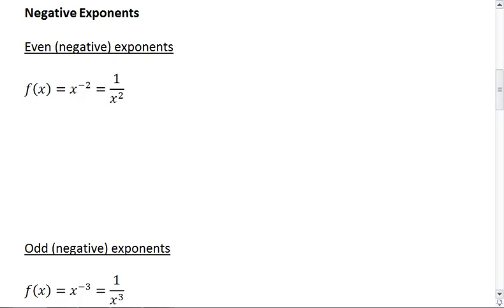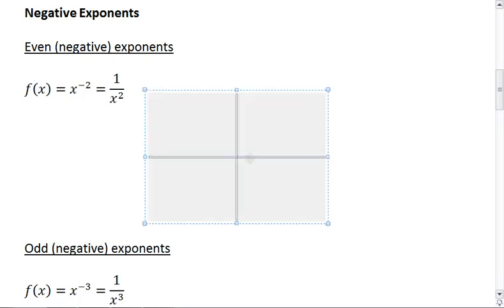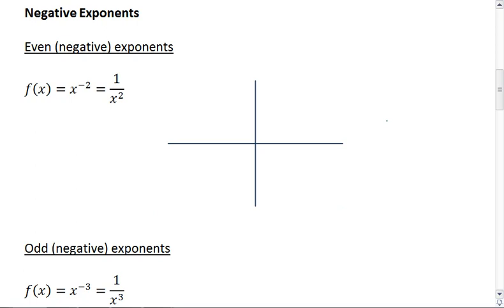Negative exponents. So if we have x to the negative 2, which is 1 over x squared, our graph looks like this. And we see similar shapes.